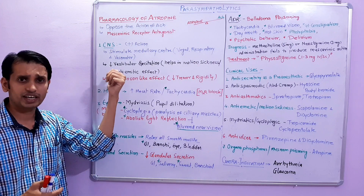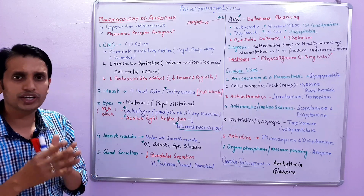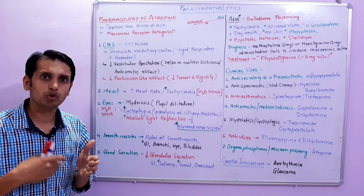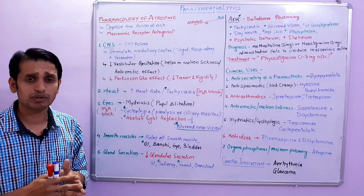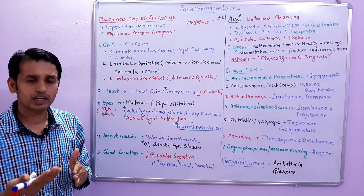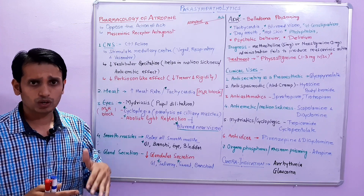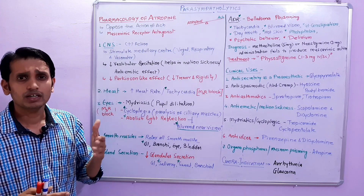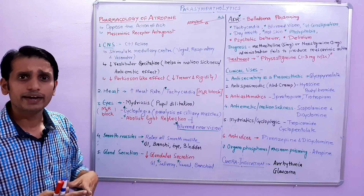Atropine decreases vestibular excitation, which helps in motion sickness, producing an antiemetic effect. Regarding the vomiting center — the CTZ, chemoreceptor trigger zone — centrally acting antiemetic drugs like scopolamine and dicyclomine block the vomiting center and decrease the emetic effect, producing an antiemetic response.